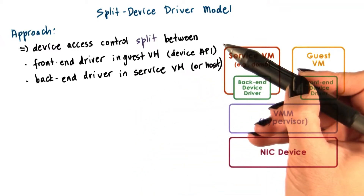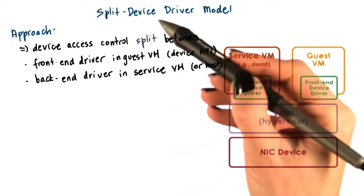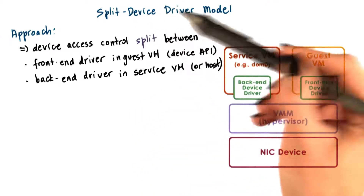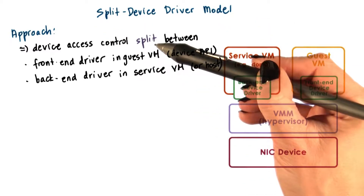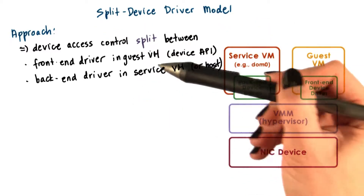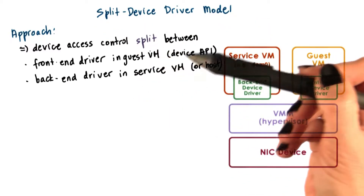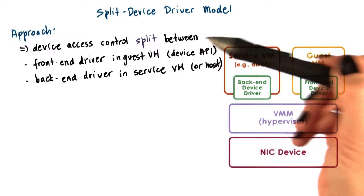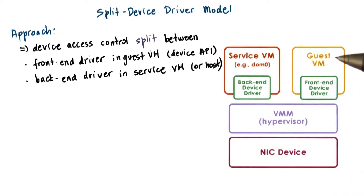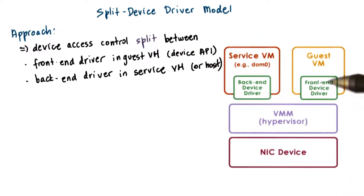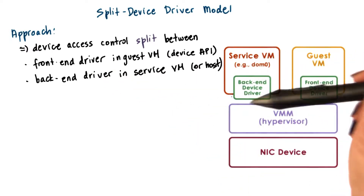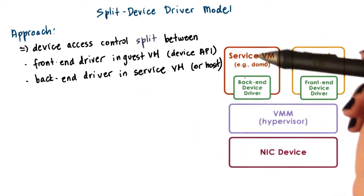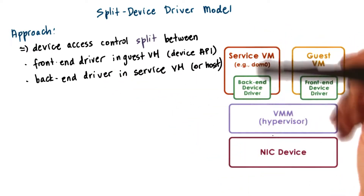A third model to device virtualization is the so-called split device driver model. This model is called split because all of the device accesses are controlled in a way that involves both a component that resides in the guest virtual machine, and also a component that resides in the hypervisor layer.